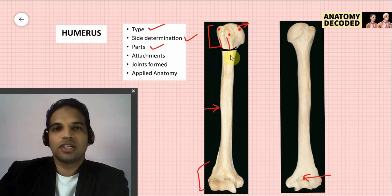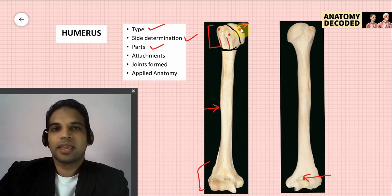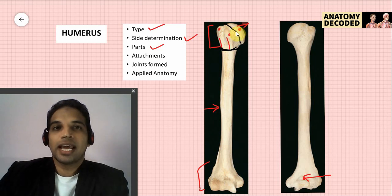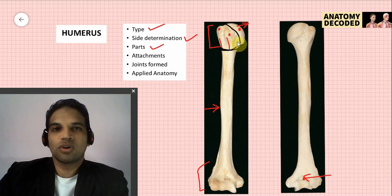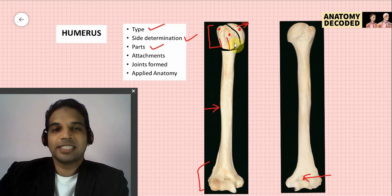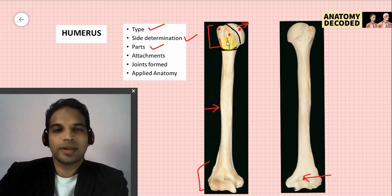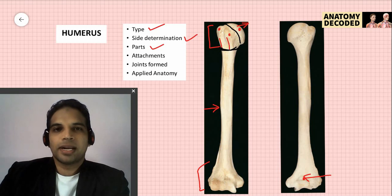The surgical neck separates the upper end from the shaft. The anatomical neck separates the head from the rest of the upper end. There is also a morphological neck, a radiological feature representing the epiphysial plate, located between the anatomical neck and surgical neck — it cannot be appreciated in gross anatomy.